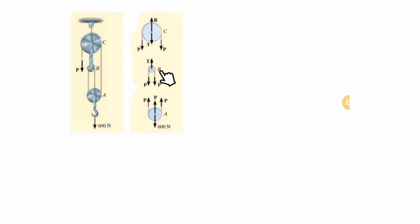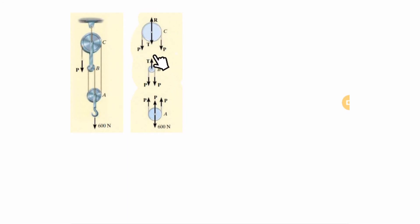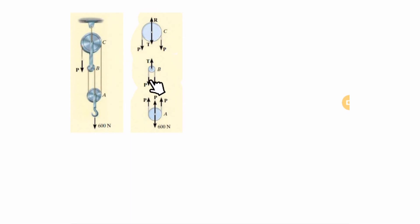All tensions in the single cable are the same P, which reduces the number of unknowns. For example, with a 600 N load and three segments of cable supporting it, each tension P = 600/3 = 200 N. Then a supporting force of 400 N can be found, and you can solve for reaction R.